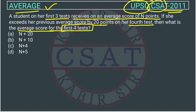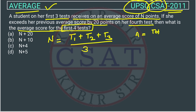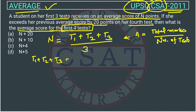The question has given the average score of the first three tests as n. Let's suppose the tests are t1, t2, and t3. Using the formula: average = total marks divided by number of tests, we get t1 + t2 + t3 = 3n.